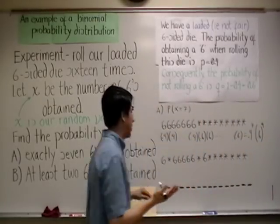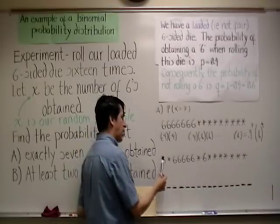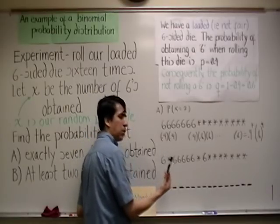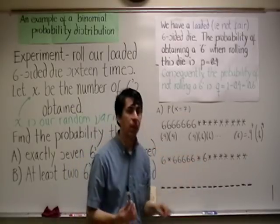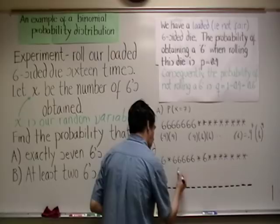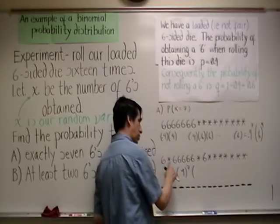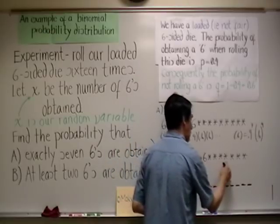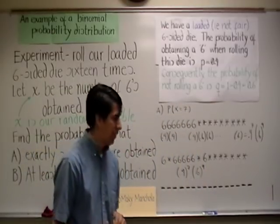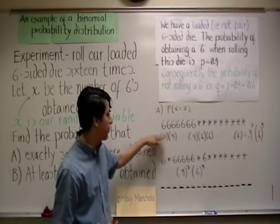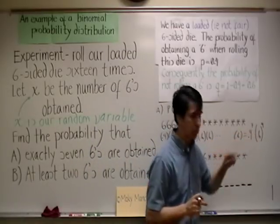If we consider this other case, let's observe that when we compute the probability of this case, we are going to get 0.4 to the seventh power because we do have seven sixes here as well. 0.4 here, 0.4, 0.4, 0.4, 0.4, 0.4, 0.4. It totals seven of them. So, our overall probability will be 0.4 to the seventh times 0.6 to the ninth because there will be nine non-sixes. One, two, three, four, five, six, seven, eight, nine. 0.6 to the ninth.